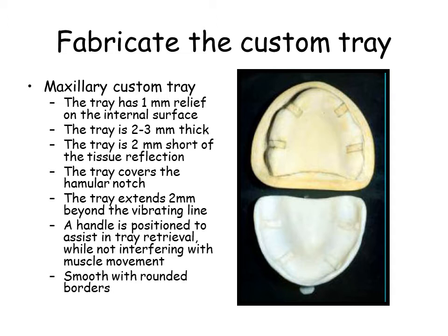The maxillary custom tray is designed to allow the recording of the functional border movements of peripheral tissue. Relief is provided to allow a uniform 1mm space for impression material. It is sufficiently thick to resist breakage. The tray is designed to be 2mm short of the tissue reflections, allowing the functioning of the peripheral limiting tissue to be carried out unimpeded.